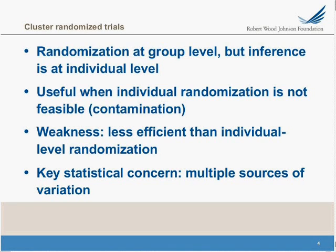The weakness of this kind of design is that it's less efficient than individual-level randomization and typically requires larger sample sizes. The key statistical concern is that there are multiple sources of variation because individual units — in our case, intensive care units — might vary. For example, imagine trying to compare outcomes of a neurological ICU and a cardiac ICU: very different case mix of patients, very different outcomes. It would be hard to disentangle the effect of case mix from the effect of the intervention if we had used one as treatment and the other as control.